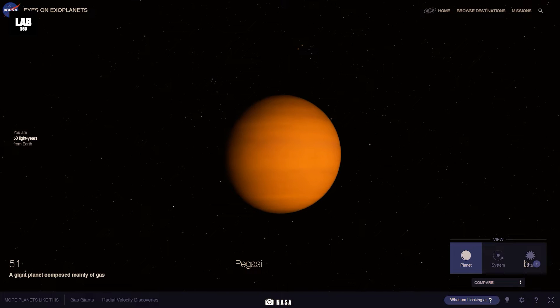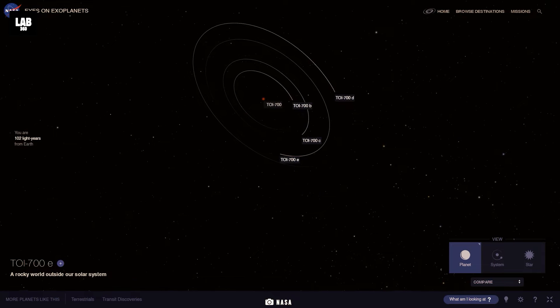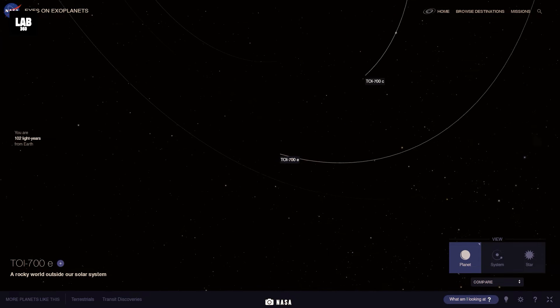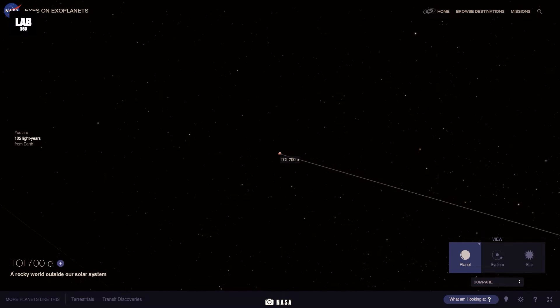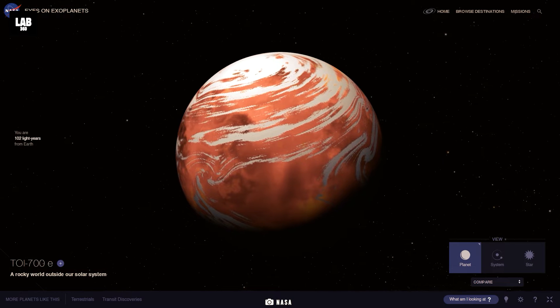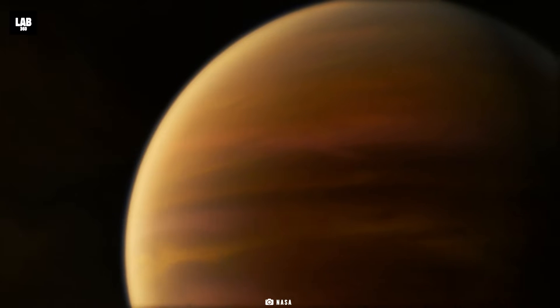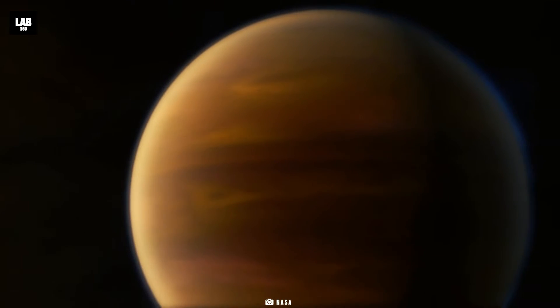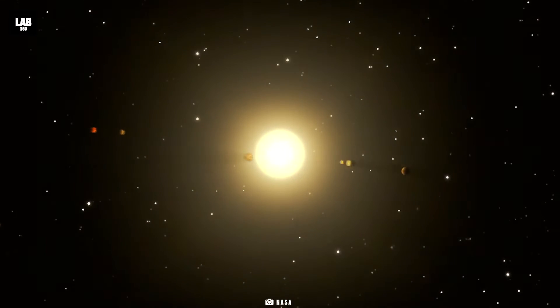The latest terrestrial exoplanet to join the list is TOI-700e, a rocky planet situated 102 light years away. These exoplanets are often also referred to as free-floating or rogue planets.